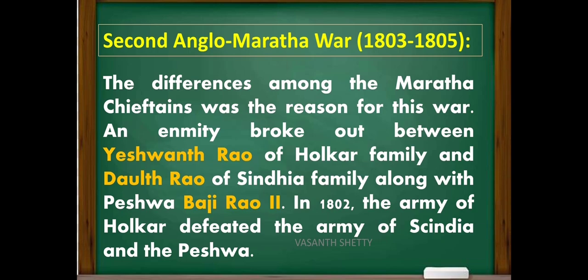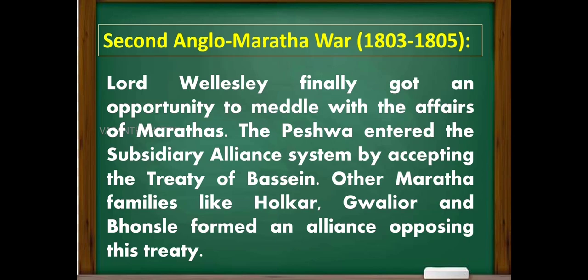The Second Anglo-Maratha War was fought between 1803 to 1805. Differences among the Maratha chieftains were the reason for this war. An enmity broke out between Yashwantrao of the Holkar family and Daulat Rao of the Scindia family, along with Peshwa Baji Rao II. In 1802, the army of Holkar defeated the army of Scindia and the Peshwa. Lord Wellesley finally got an opportunity to meddle with the affairs of the Marathas. The Peshwa entered the subsidiary alliance system by accepting the Treaty of Bassein.